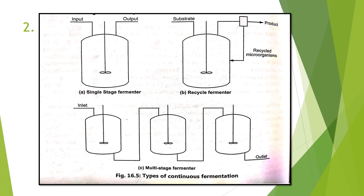The third technique is the multi-stage fermenter. In this, more than one or two fermenters are connected to each other. For three containers, only one inlet and one outlet is present. The inlet is supplied to the first container, which is connected to the second, and the second to the third. This is called a multi-stage fermenter because unused microorganisms are utilized again and again.